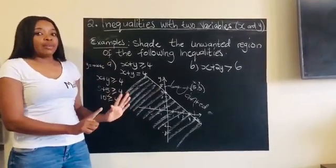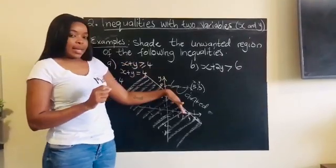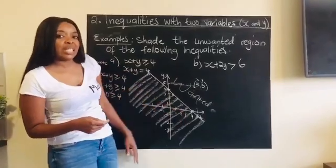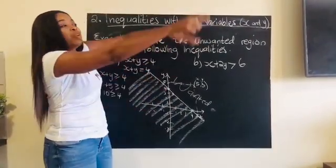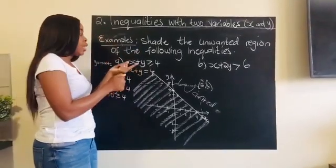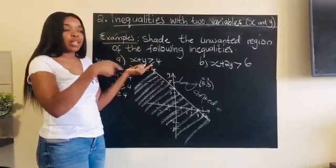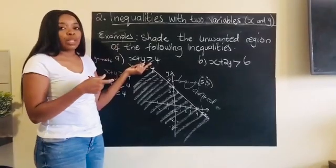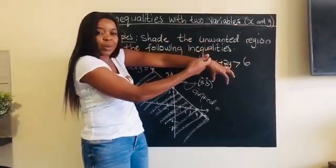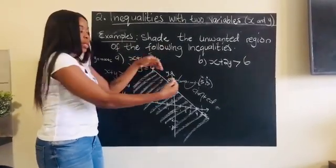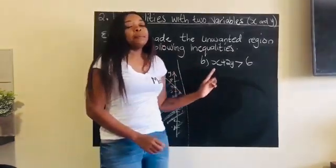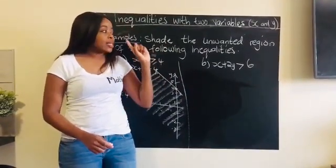My own method: after drawing the graph, I look at the line and think — above the line is going to be 'greater than,' and below will be 'less than,' because things are increasing as you go up. With that thinking, I look at the direction of the inequality symbol. If they're talking about 'greater than,' that region is above the line — that's the wanted region. So I shade the unwanted region, which is the other side.